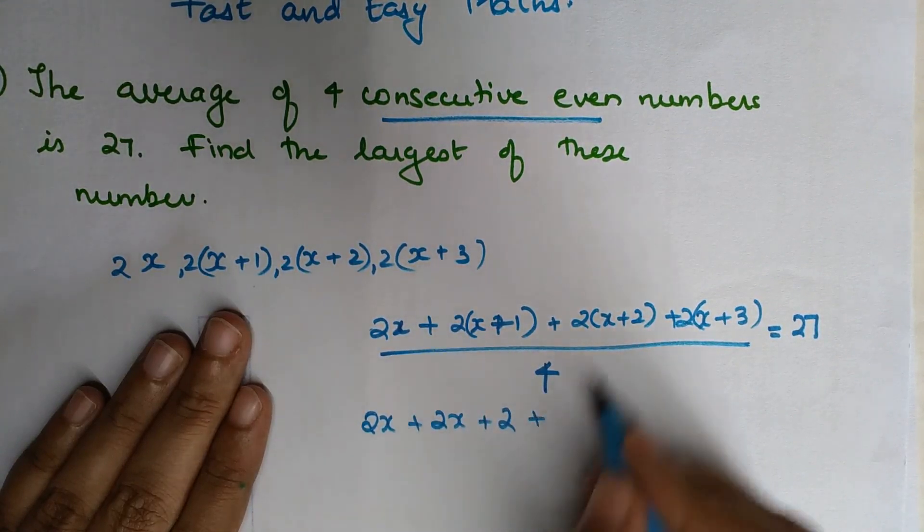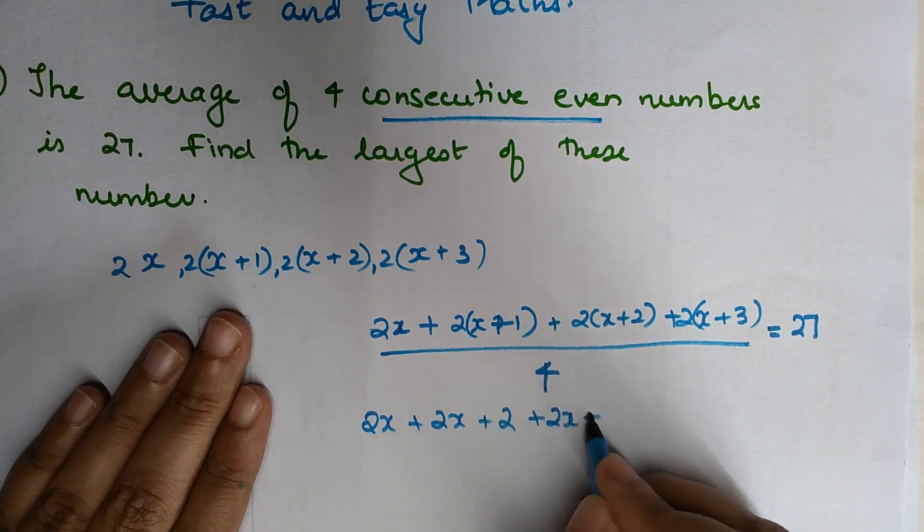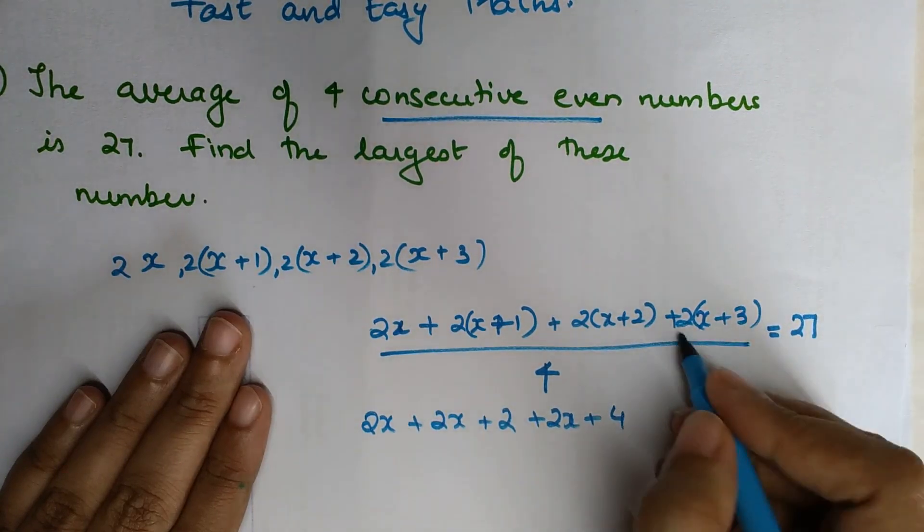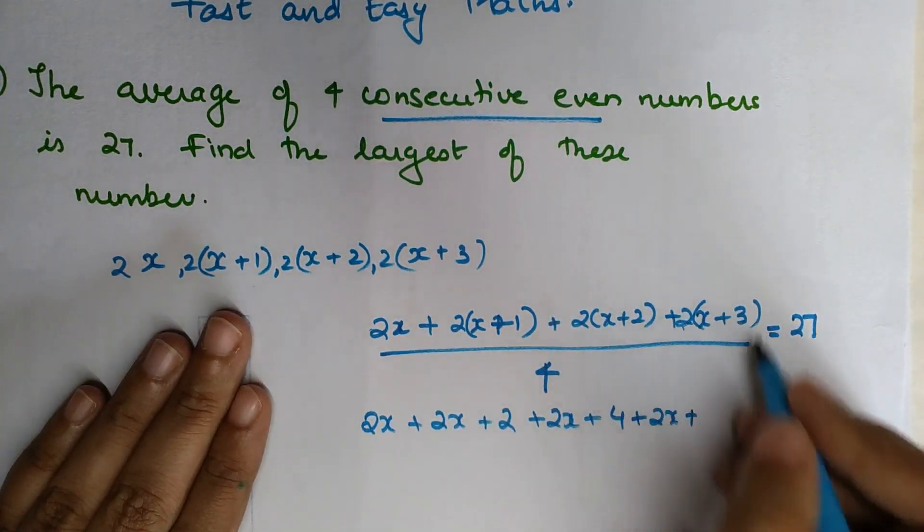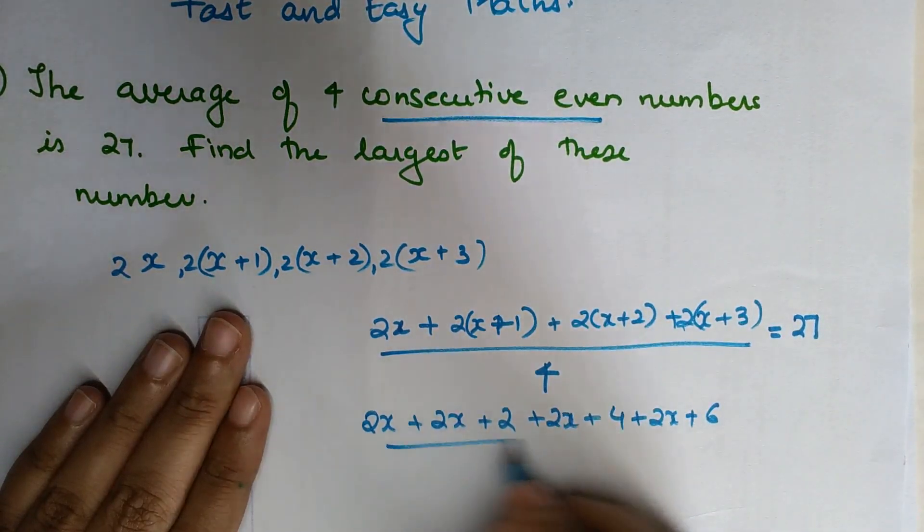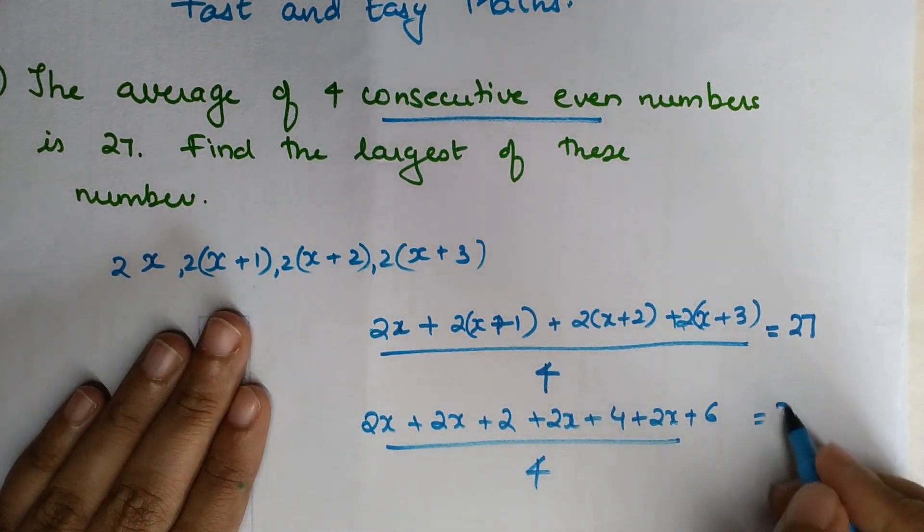...is 2, plus 2x, plus 4, plus 2x, plus 6. All divided by 4 equals 27.